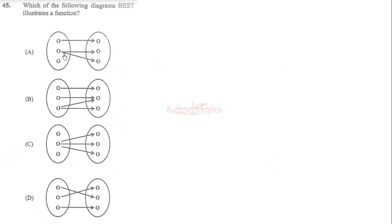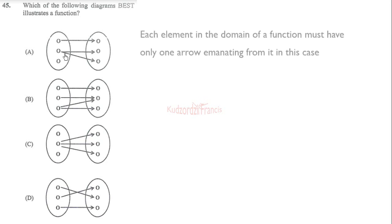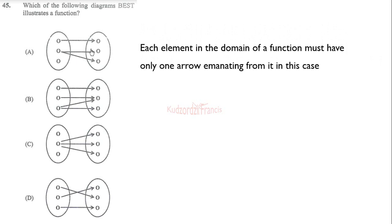Question 45 asks which diagram best represents a function. For a function, we must have only one arrow coming out of each element of the domain. Looking at the options: one has two arrows coming out of one element — disqualified; another has two arrows from one element — disqualified; another has three arrows from one element — disqualified. The correct choice has one arrow from each domain element.